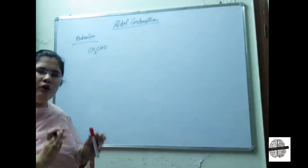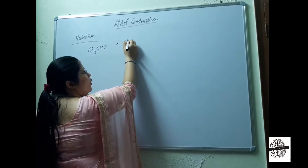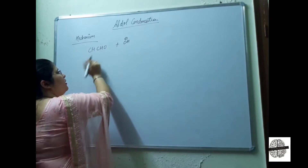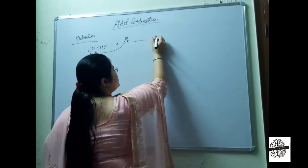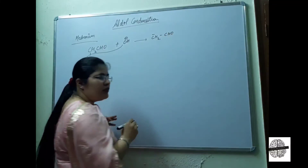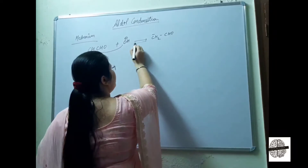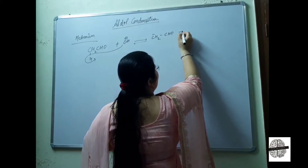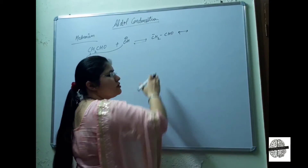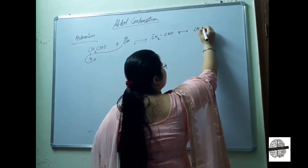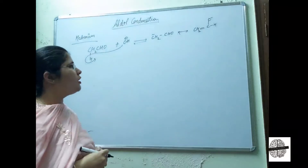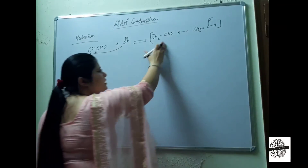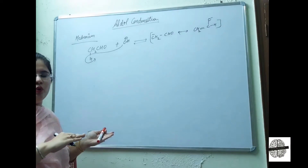Taking CH3CHO as the first molecule of aldehyde: when it reacts with OH negative ion, the OH attacks the alpha hydrogen and removes it, forming CH2⁻CHO — a carbanion. This is a reversible reaction. The electrons get delocalized and form CH2=CHO⁻ (an enolate ion).